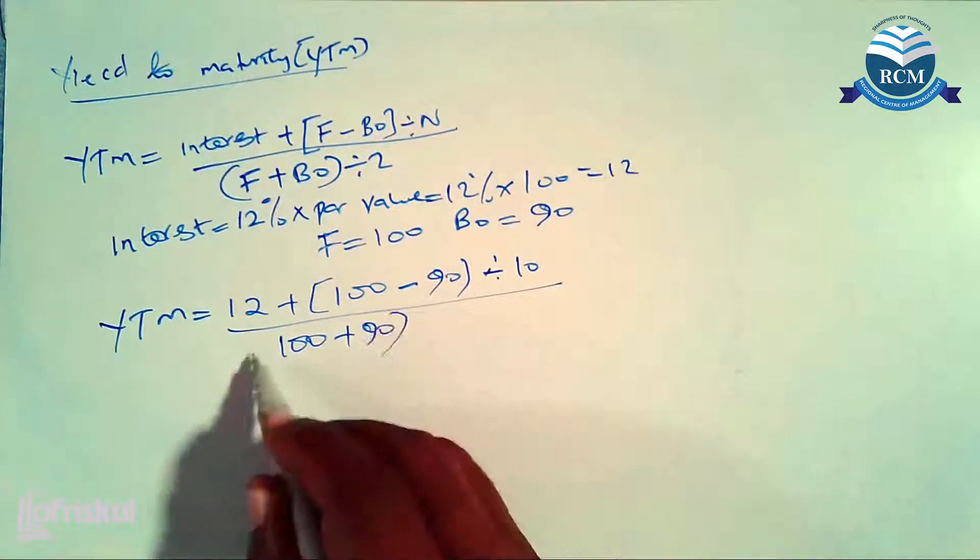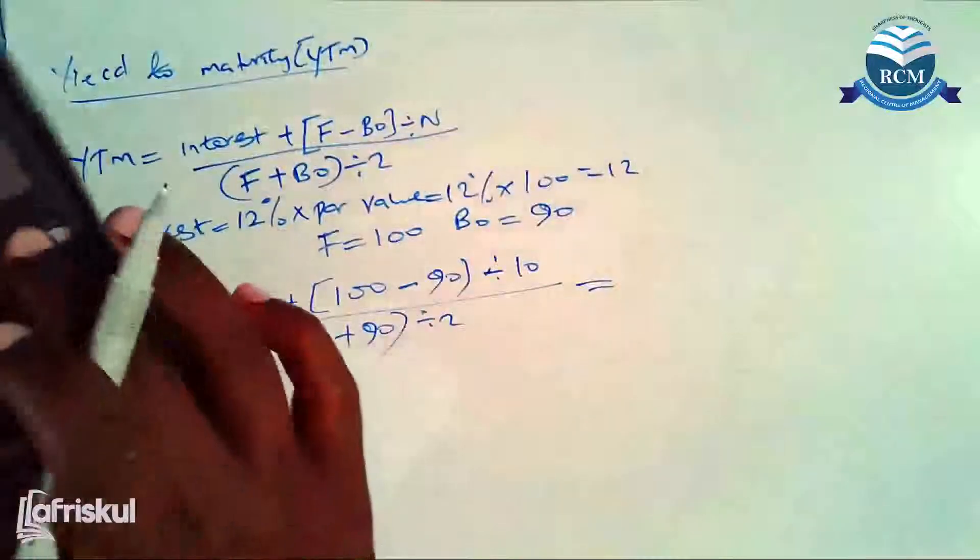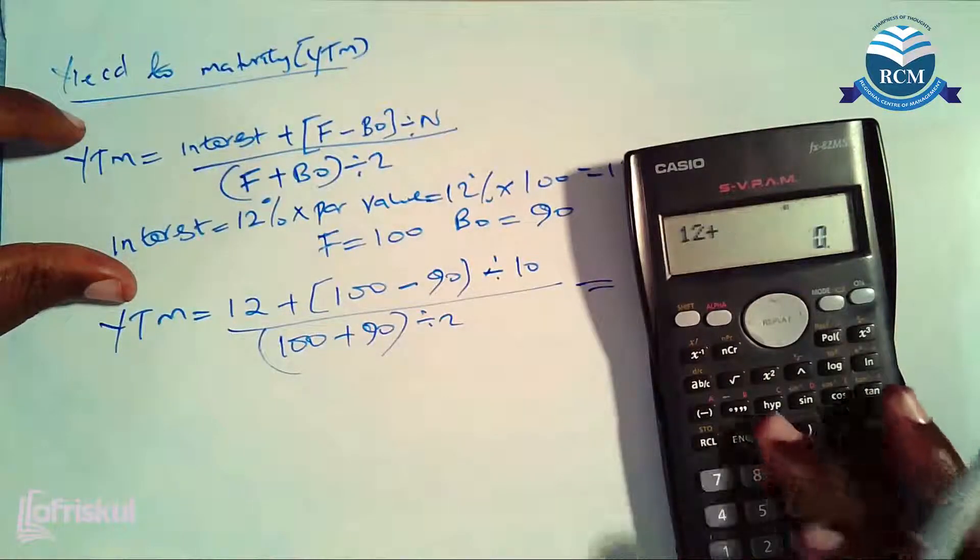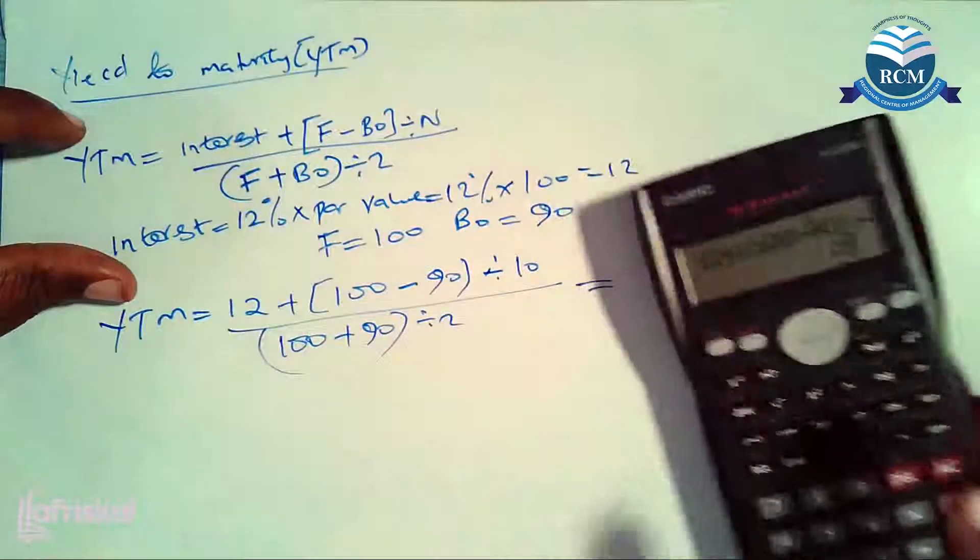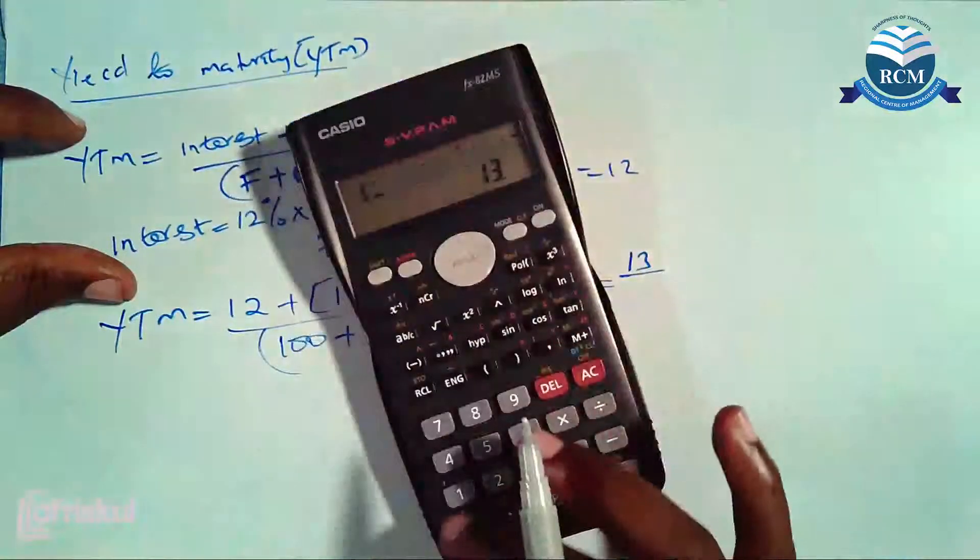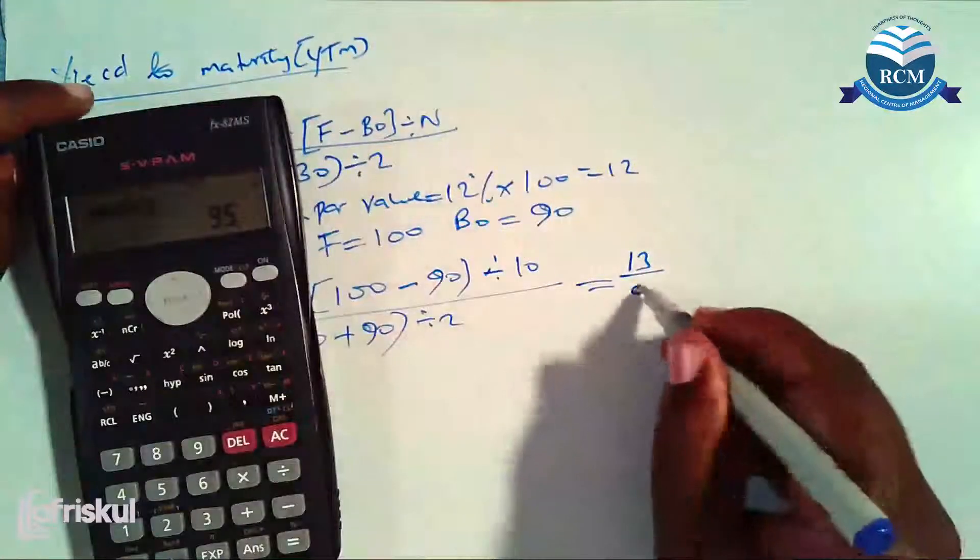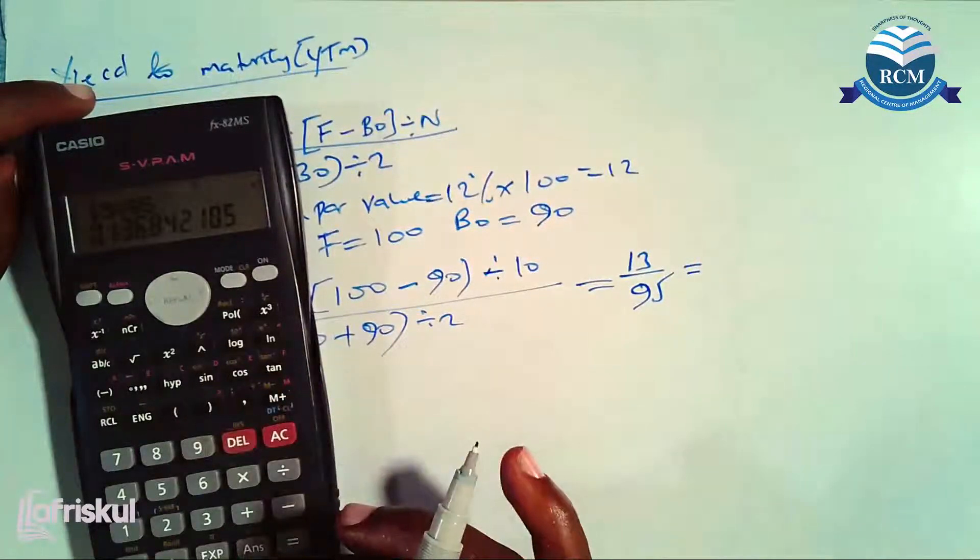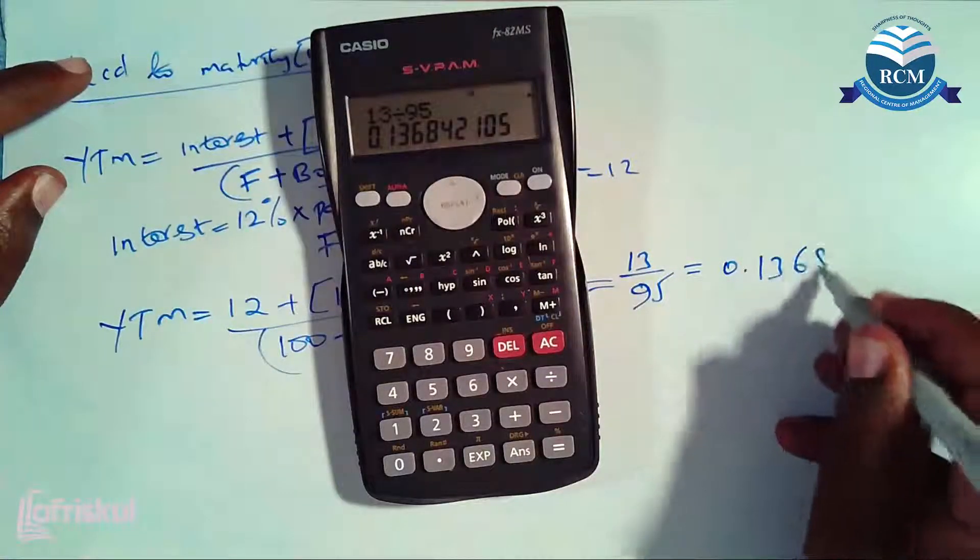Then this one here will be equal to 12 plus 100 minus 90 divided by 10, which gives us 13, divided by 100 plus 90 divided by 2, which gives us 95. So 13 divided by 95 gives us 0.1368 which is the same as 13.68 percent.